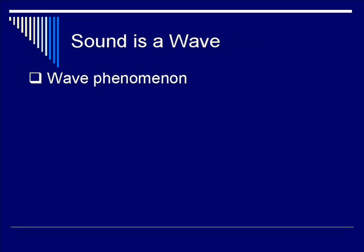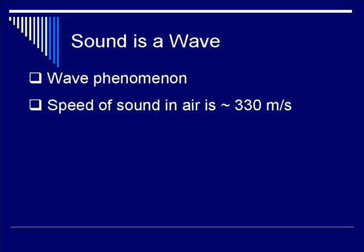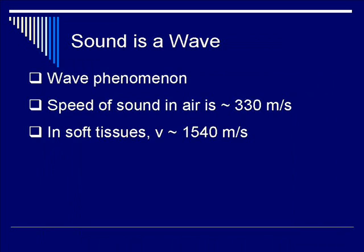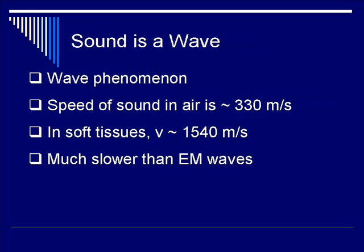Sound travels through air, water, and even a block of steel. In air, the speed of sound is 330 meters per second. In soft tissues, ultrasound actually travels at a much higher speed of 1,540 meters per second, making it close to Mach 5. On the other hand, sound wave velocities are almost five decades slower than electromagnetic waves, so this needs to be taken into consideration.